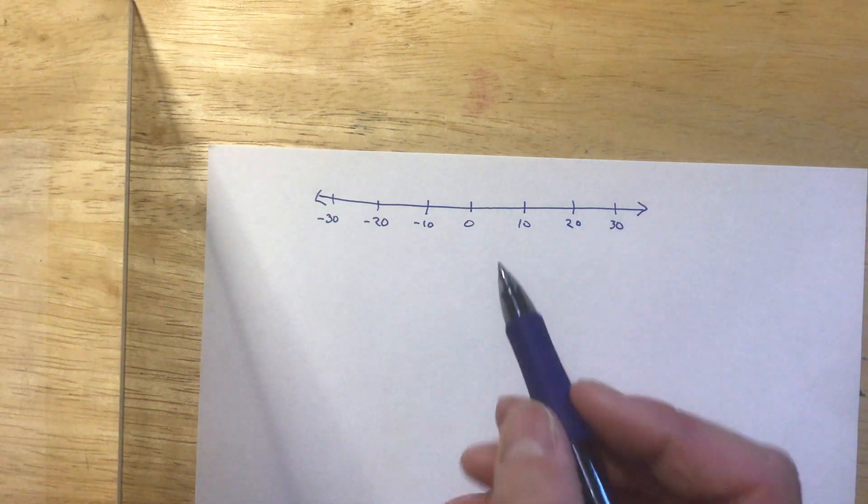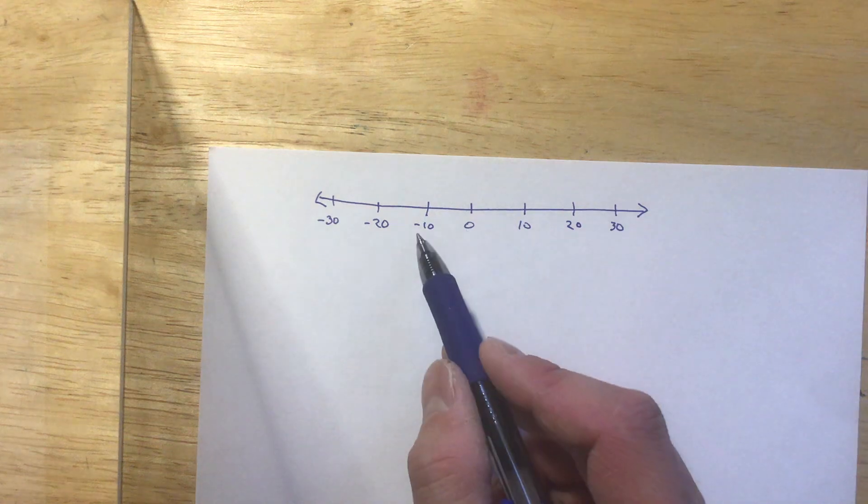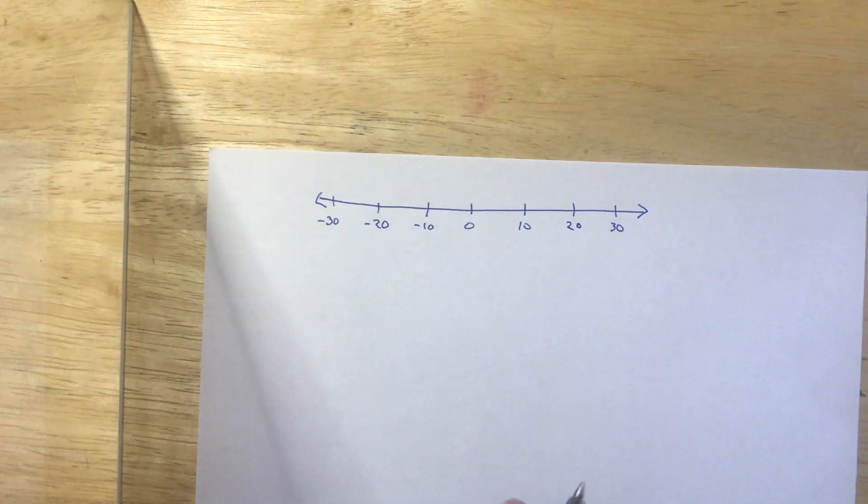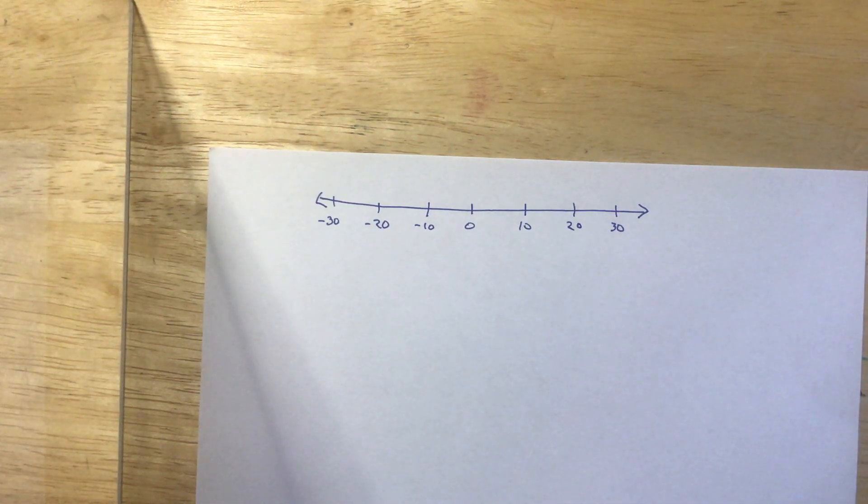Remember that negative numbers is this concept that below zero, we can go in that direction. We can sink below the base, below zero.